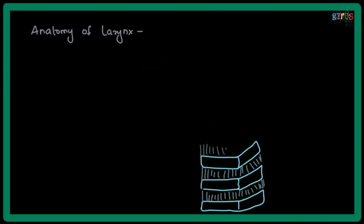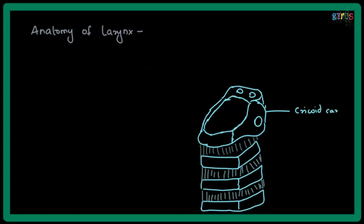We will discuss the cartilages of larynx first. This looks like a ring-like cartilage and it is called the cricoid cartilage.